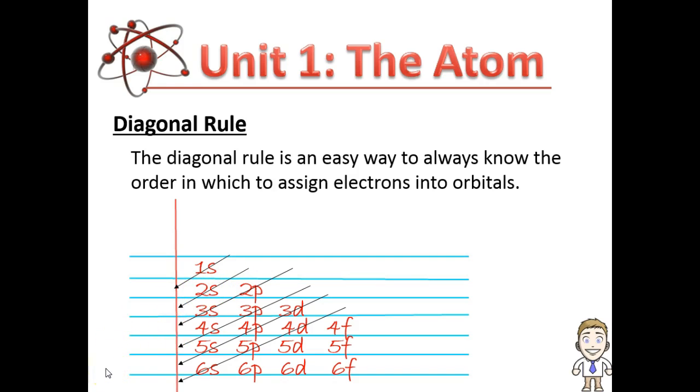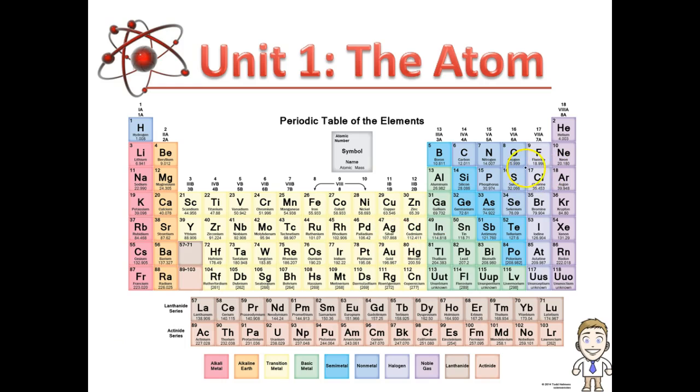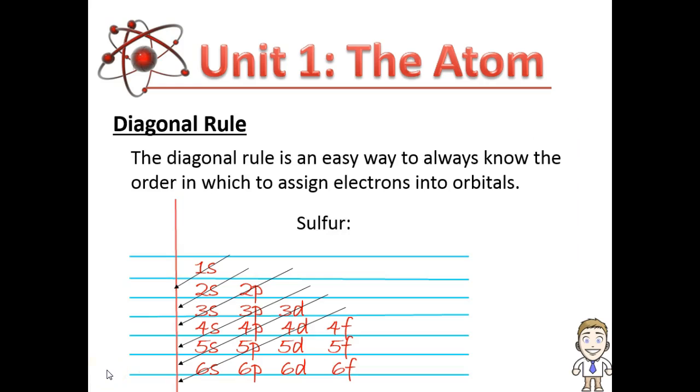It sounds crazy, but it really works. Let me show you an example right now. We'll look at sulfur. It's a nice easy one. First thing is, find sulfur's symbol. It has 16 electrons to fill, so I have 16 electrons to assign.